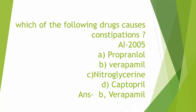Which of the following drugs causes constipation? This is an All India 2005 question. Choice A is Propranolol, Choice B is Verapamil, Choice C is Nitroglycerin, Choice D is Captopril. The answer is B — Verapamil.